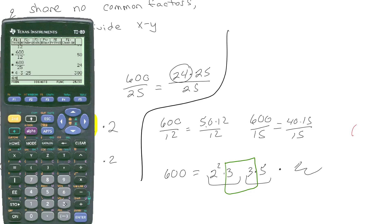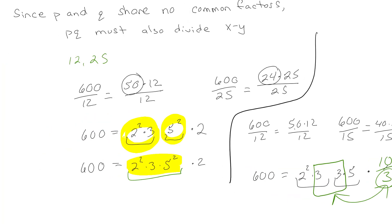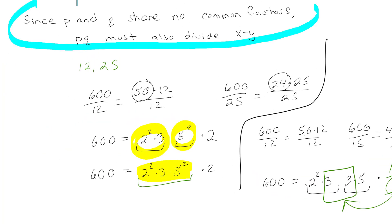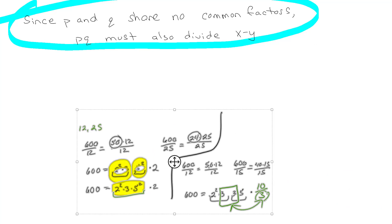I feel like there should be a really easy way to prove this using math and I can't figure it out — but hopefully one of you watching will find it and send me a link that doesn't require learning five more theorems. Most explanations just say, 'Since P and Q share no common factors, PQ must also divide X minus Y,' like it's super obvious. And I don't know why it's not super obvious to me — but I can demonstrate it; I just can't formally prove it.